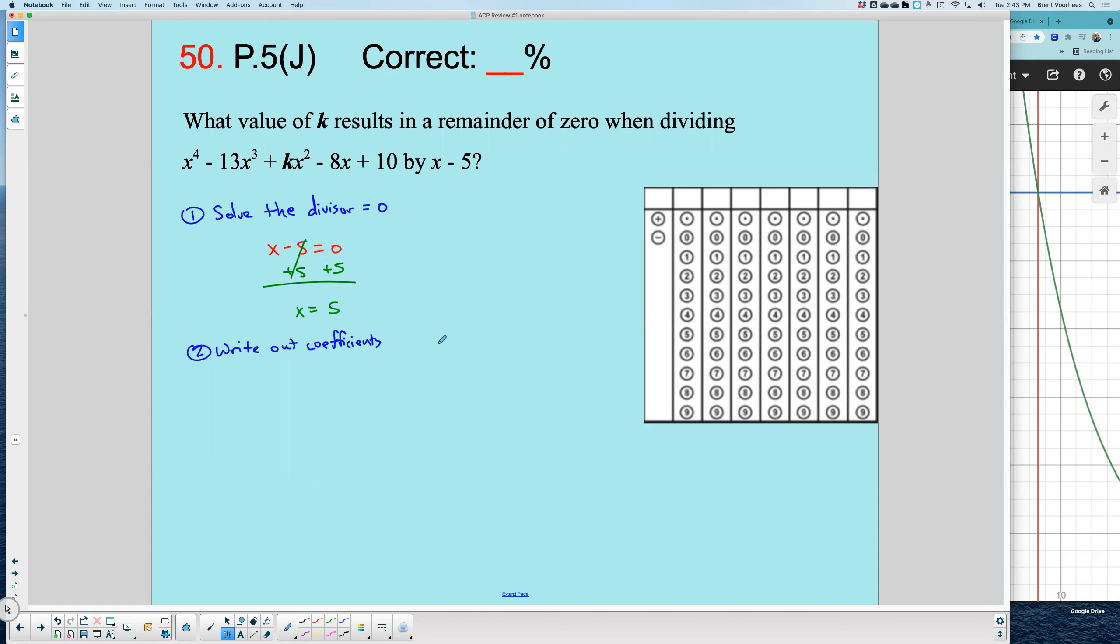So I'm going to have, I'm dividing by 5. So let me put x equals 5 here. And my coefficients, I have 1x to the fourth. I have -13x cubed. I have kx squared.